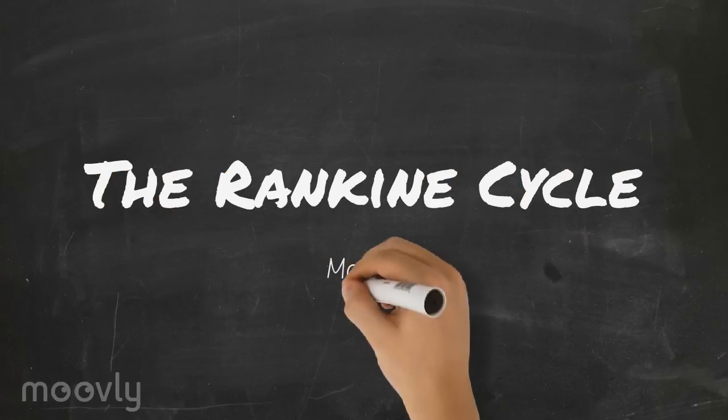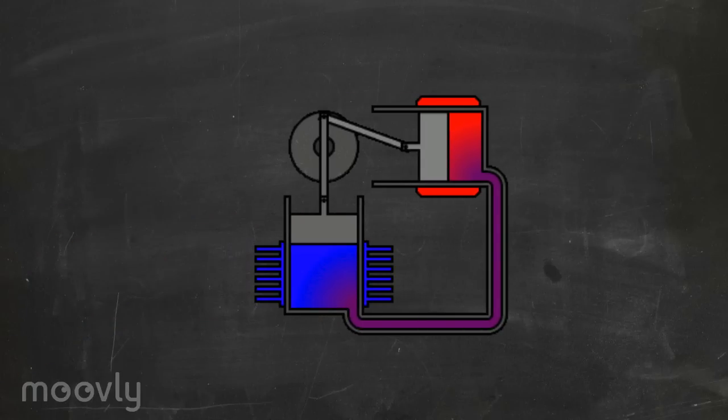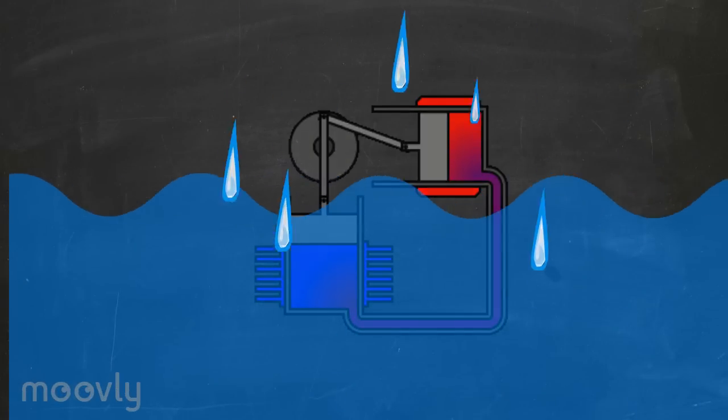The Rankine Cycle is an operating cycle of power plants, where an operating fluid is continuously evaporated and condensed.